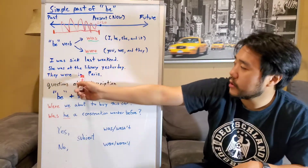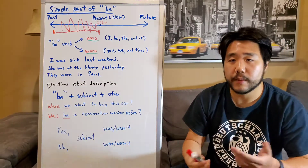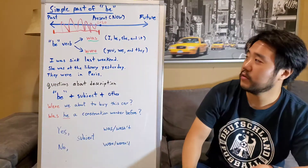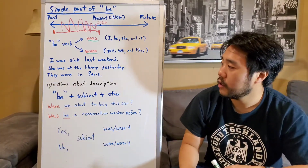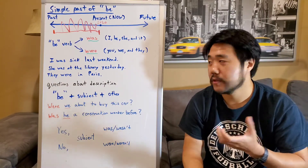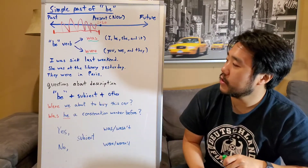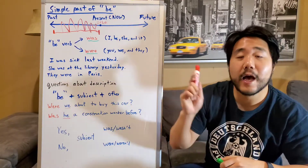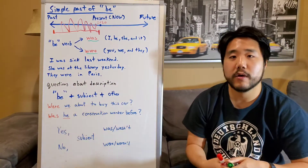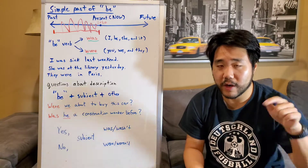Here are more examples. 'She was at the library yesterday' — since the subject pronoun is 'she,' we use 'was.' Yesterday refers to the past. 'They were in Paris' — here I didn't mention the exact time, but it happened in the past and they're not in Paris anymore right now.